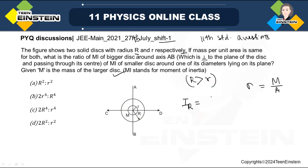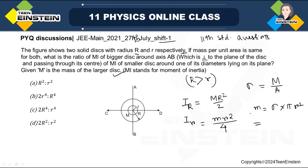The moment of inertia of the bigger disk about its own axis is M R² / 2. If the smaller disk has mass small m, then its moment of inertia about a diameter is m r² / 4 — half of the moment of inertia about its own axis. But we don't know the mass of the smaller disk.